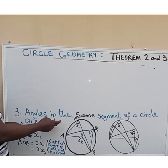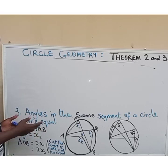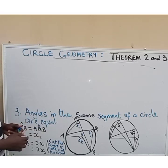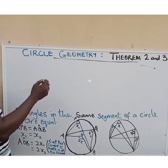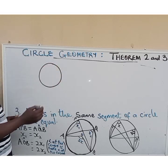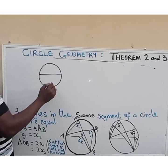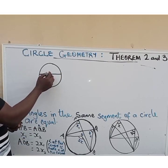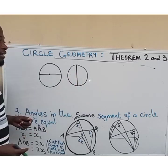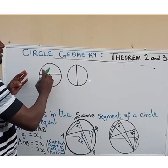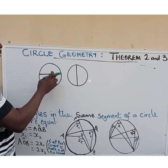Theorem 3 is talking about angles in the same segment of a circle. Angles in the same segment of a circle are equal. When we talk about angles in a semicircle we talk about the diameter — the line that passes through the center of the circle, dividing it into two. We have the semicircle here and the semicircle here. Now we are talking about segments.